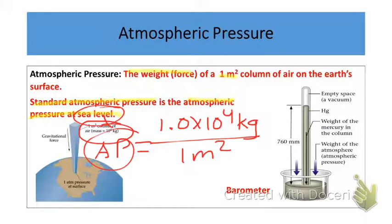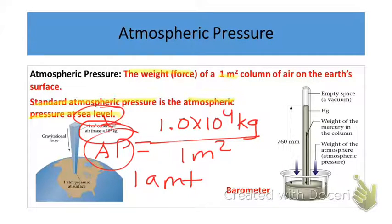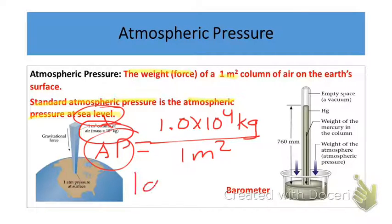It turns out that the atmospheric pressure at sea level is 1 atmosphere — 1 atm.